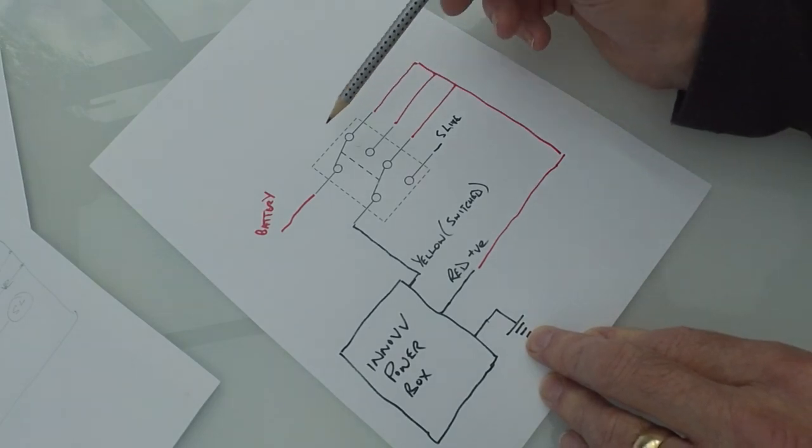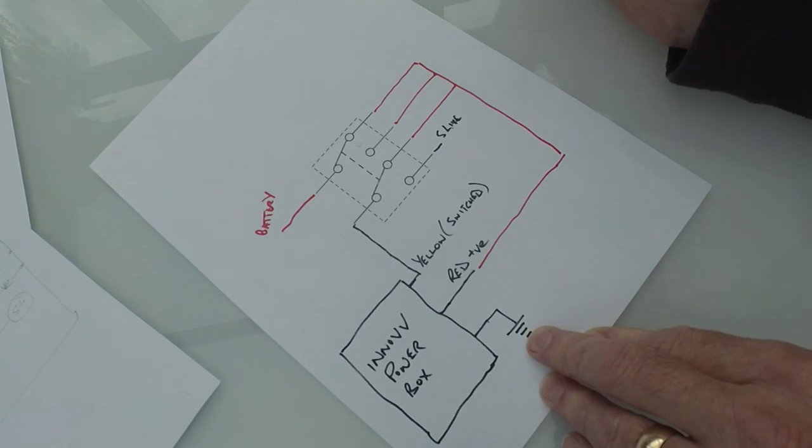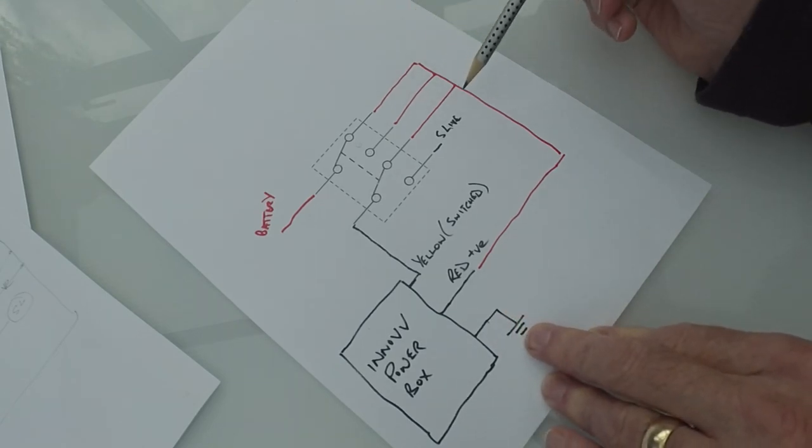So with that simple double pole, double throw, three position, center off switch, you've got the ability to have it permanently on, permanently completely disconnected except for the earth, and the recommended Inovi wiring where it comes on when the ignition comes on.